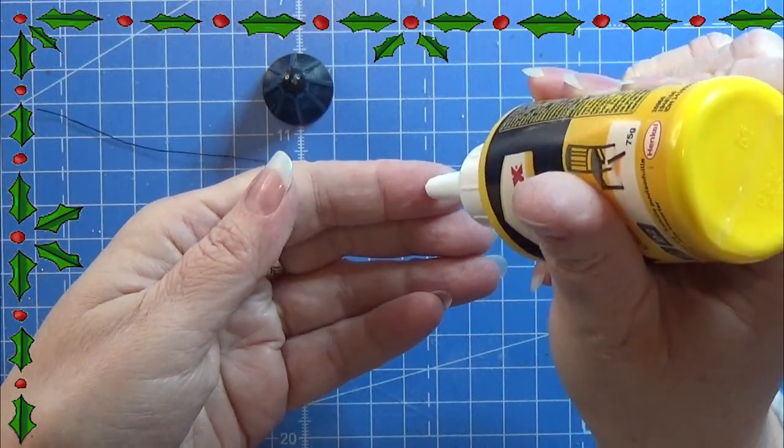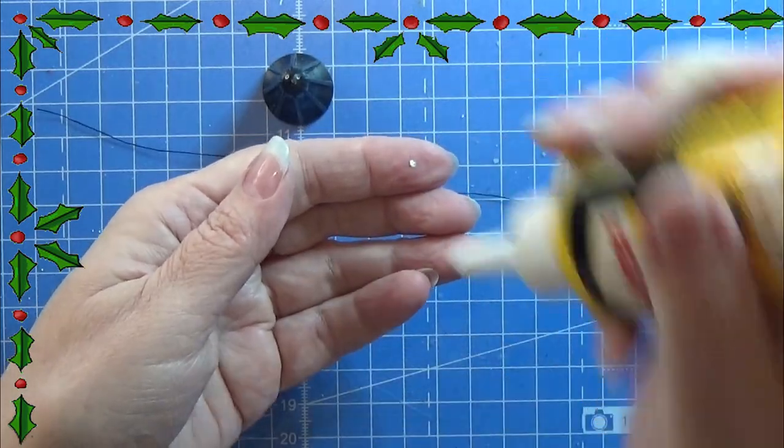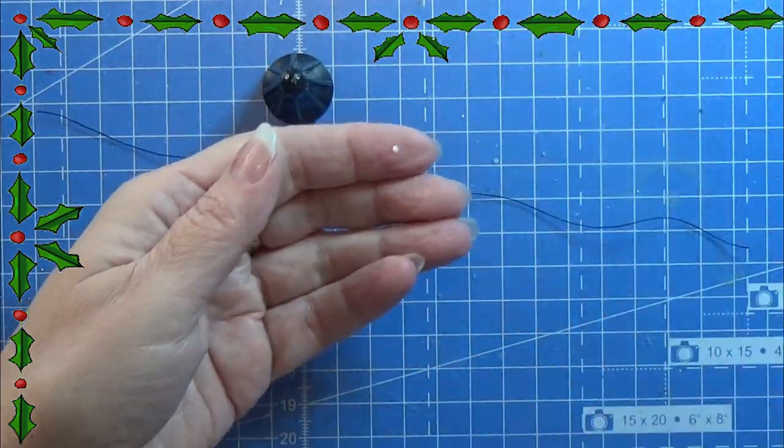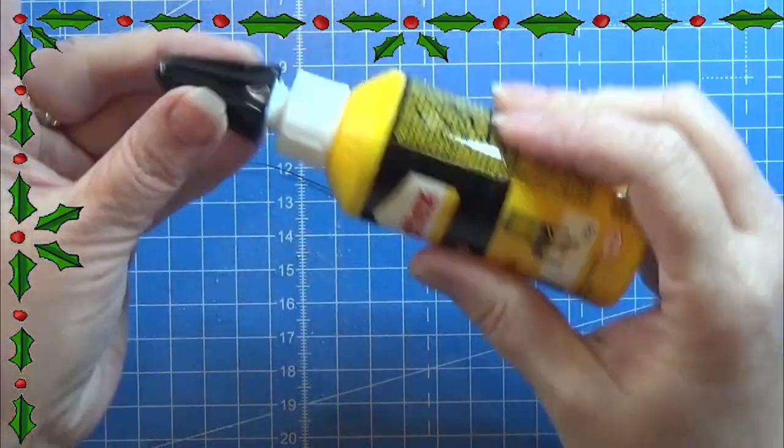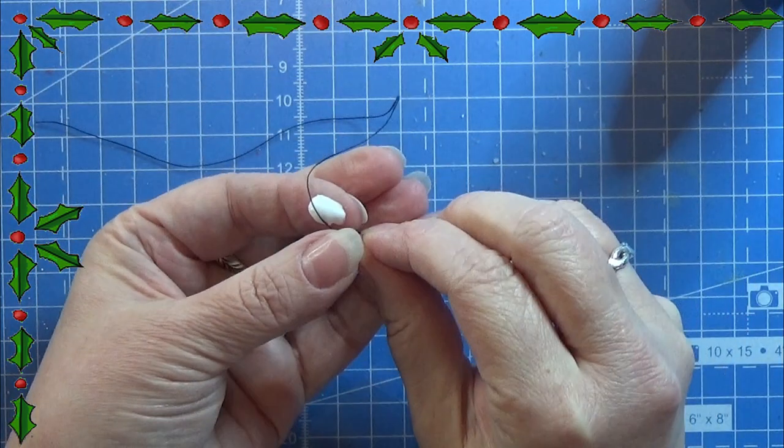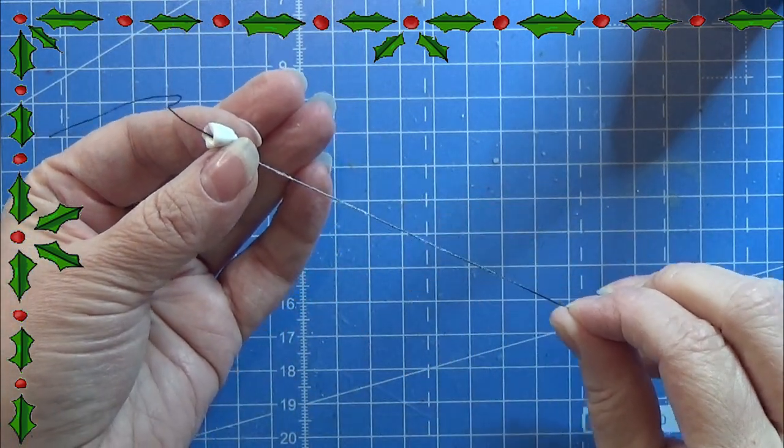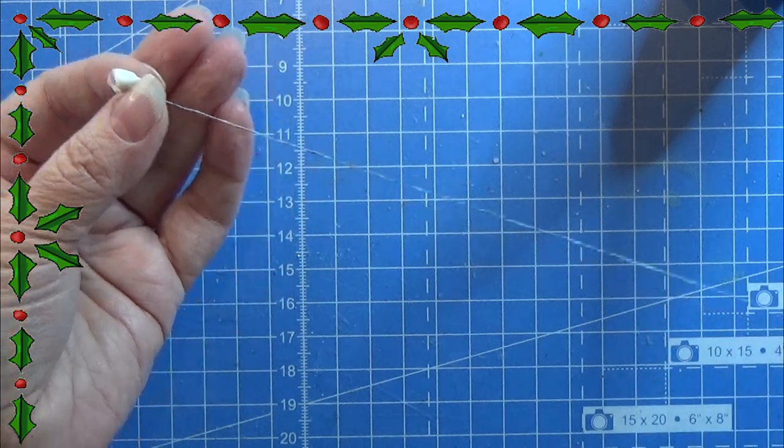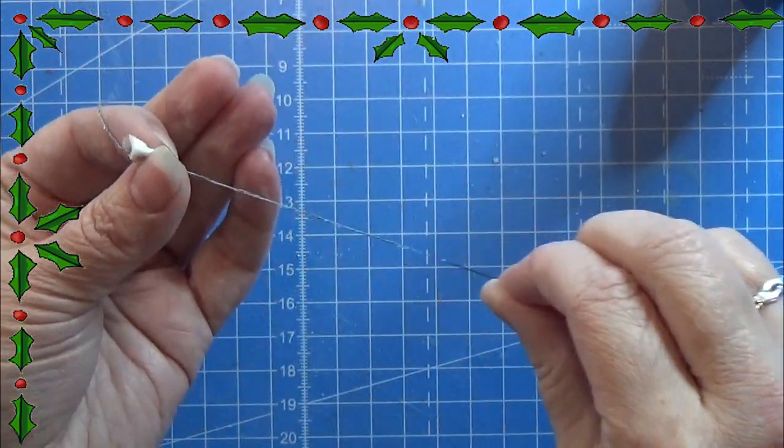I'm using some paper glue, or this is actually wood glue, but it is kind of the same stuff. I am taking a bit of it on my finger and I am just going to pull the sewing thread through the glue a few times.